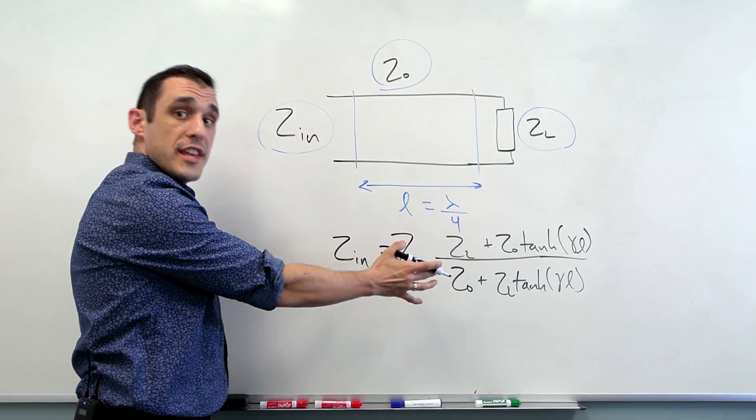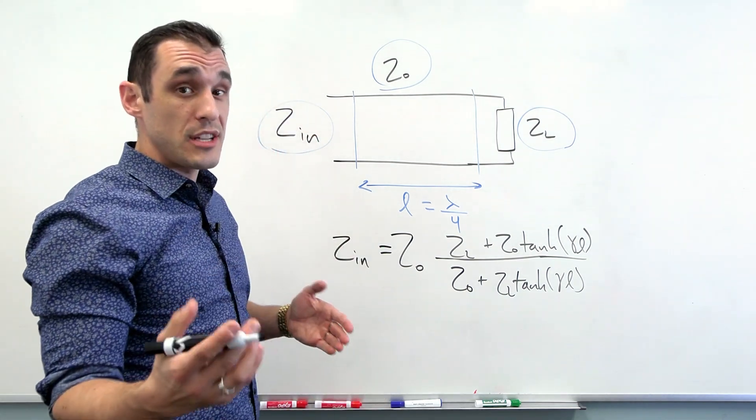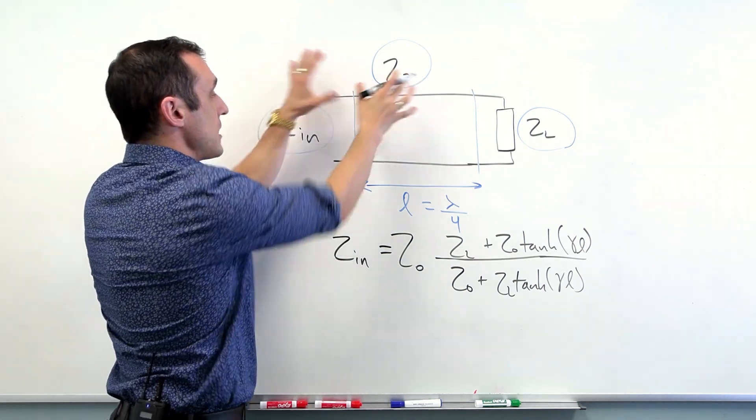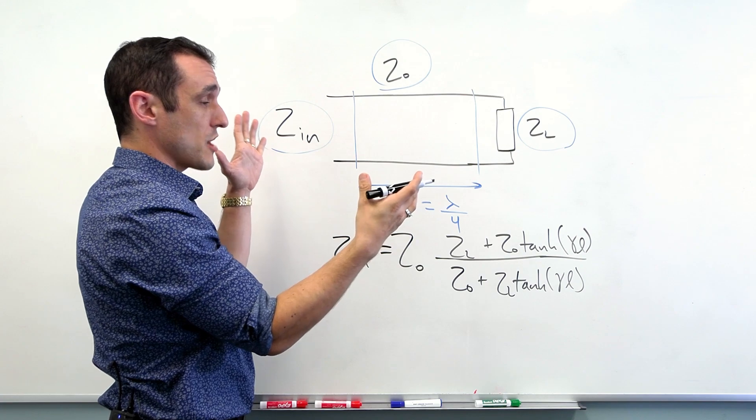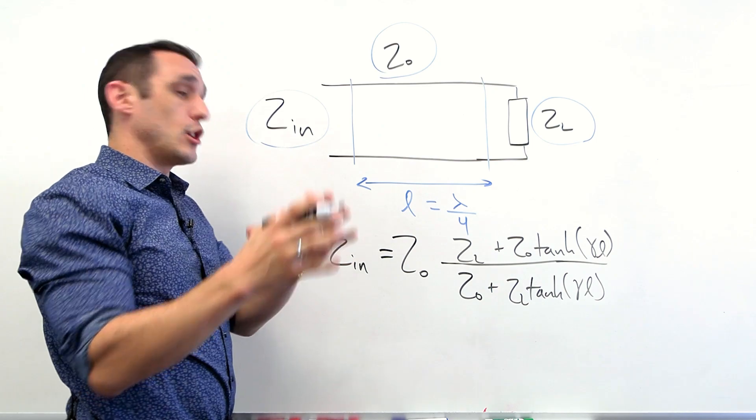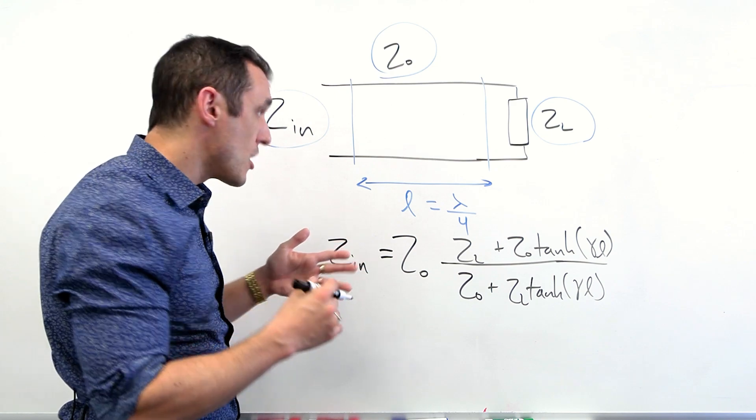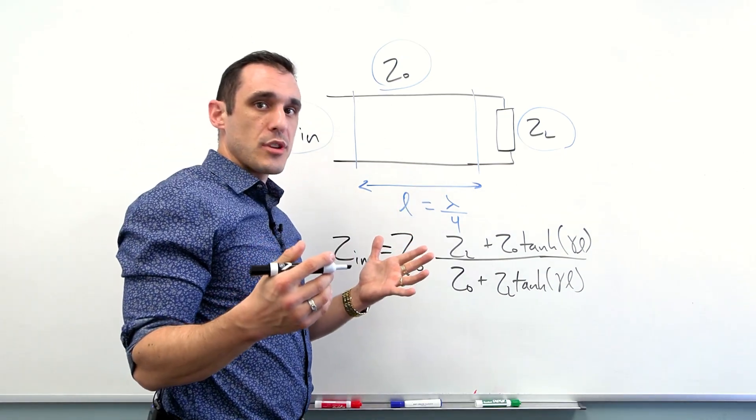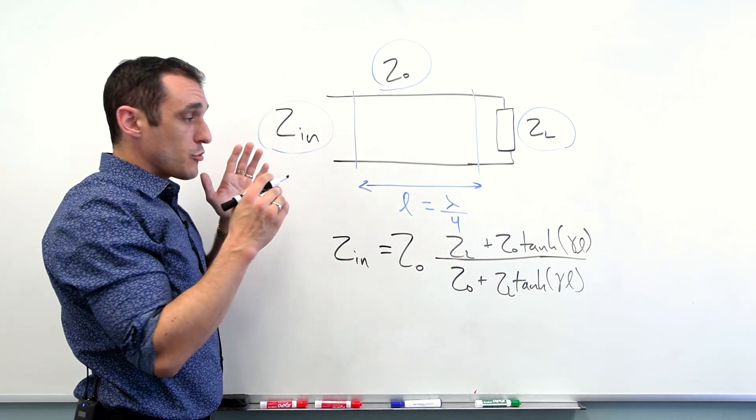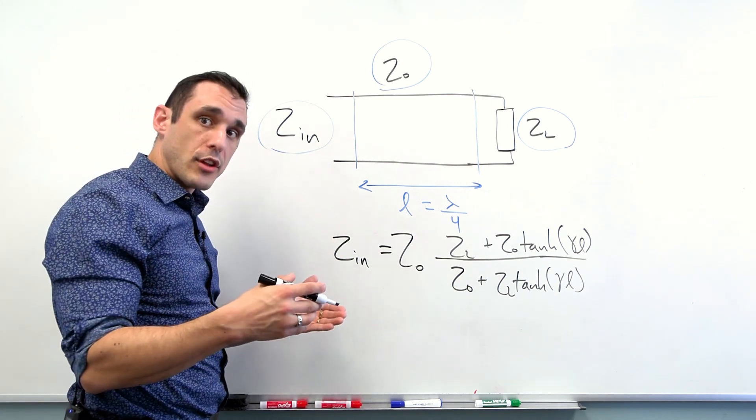The input impedance equation from transmission line theory is Z sub N equals Z sub zero multiplied by a fraction. This equation accounts for a lossy transmission line. Generally, when you start to see derivations of the impedance needed for a quarter wavelength transformer, they tend to ignore the losses. Now, if you're operating at lower frequencies, maybe you're in the gigahertz range, at the lower end of the gigahertz range at lambda over four, your losses may not be extreme. In reality, in your PCB, your dielectric will have losses and your copper will have losses.